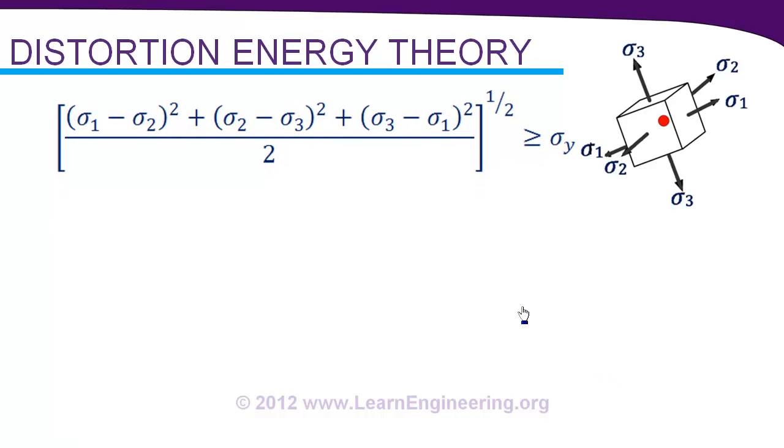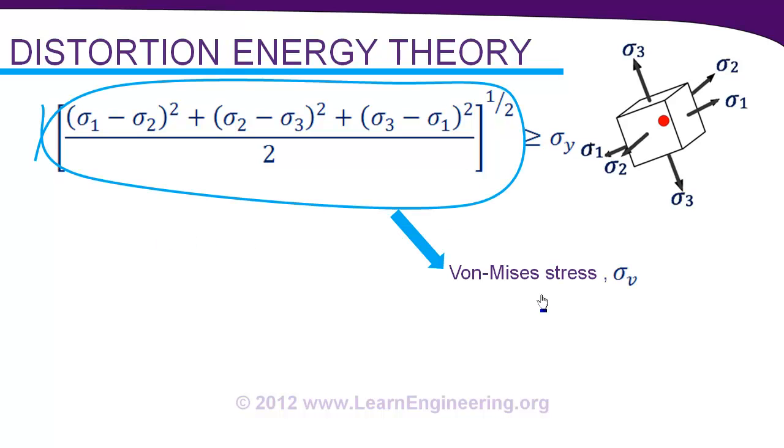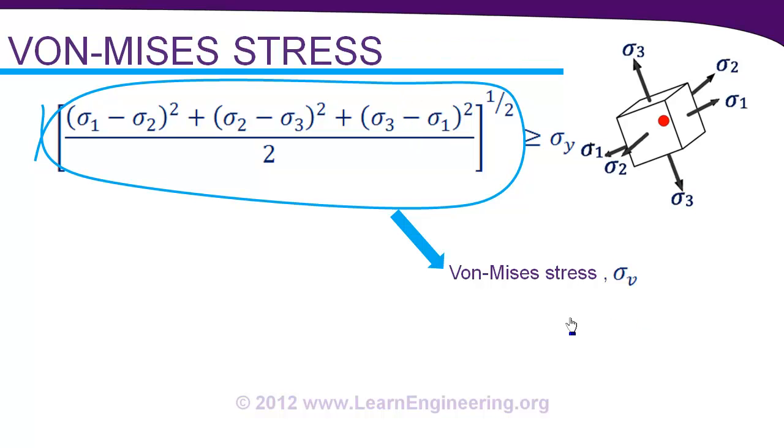Now what I do, I will call this quantity as Von Mises stress, the famous Von Mises stress. And this theory is also known as Von Mises theory of failure. So the equation can be simplified like this. When Von Mises stress inducing the material is greater than yield strength from simple tension test, the material fails.